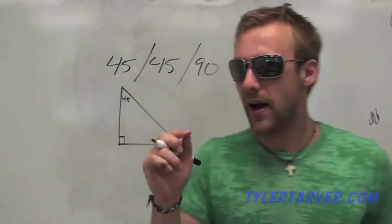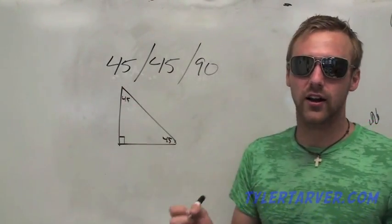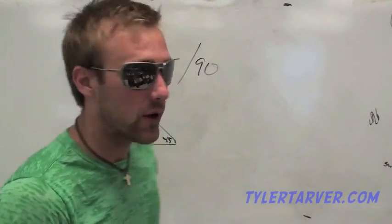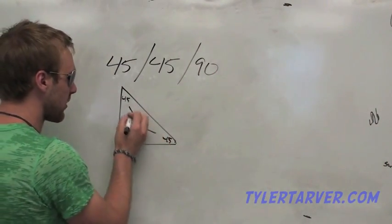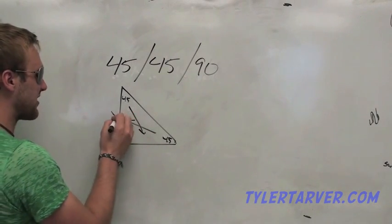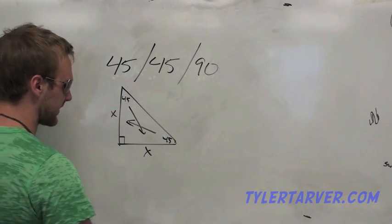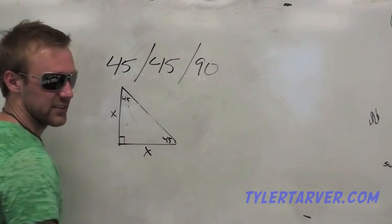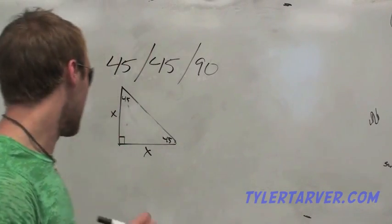What did we learn a while back about if the angles are congruent in a triangle? What does that mean about their opposite sides? You said it, congruent. That means that these opposite sides right here have to be the same. So this X, this has to be X. Okay? Now, that's old news. That's old and busted. This is new hotness coming up.